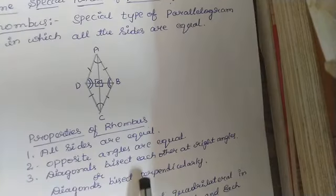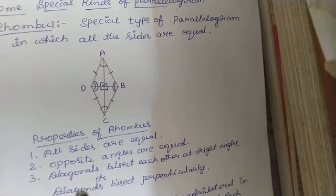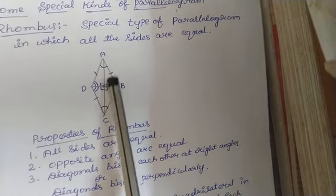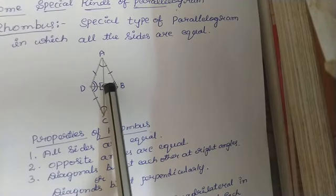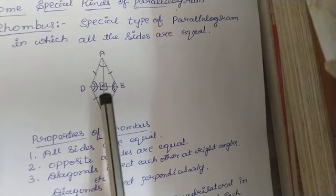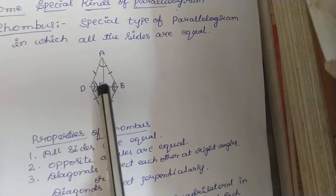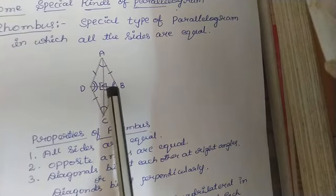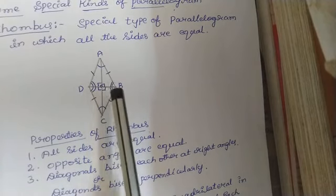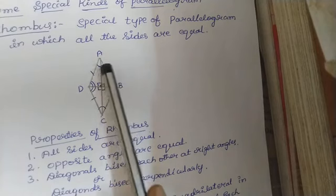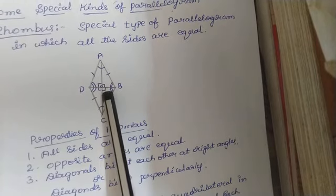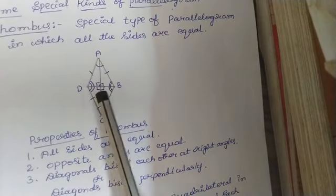Diagonals bisect each other at right angles, or you can say diagonals bisect perpendicularly — both mean the same. AO is equal to OC, and DO is equal to OB. Perpendicularly or right angle means it forms four right angles in the figure: angle AOC, angle AOD, angle DOC, and angle DOB — all form 90 degrees.